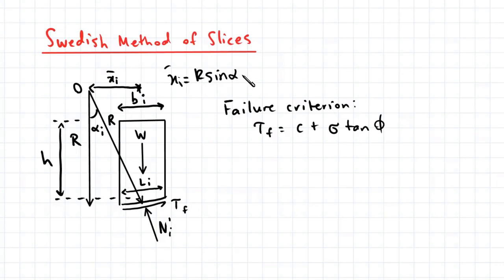Before we derive the expression for the factor of safety, let's first look at our failure criterion. The failure shear stress is equal to the cohesion plus normal stress multiplied by tan of the angle of friction. Integrating this expression gives us the shear force being equal to capital C plus the normal force multiplied by tan of the angle of friction phi.